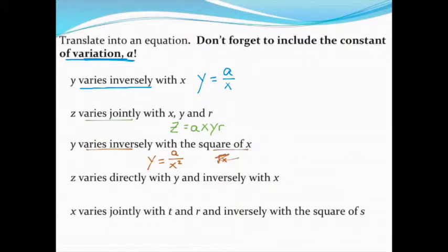Let's keep on going down the list. Next up, we have Z varies directly with Y and inversely with X. I see a lot of people on this one try to write two different equations. We're only allowed to write one. So there should be one equal sign. The way this is going to look, we'd have Z equals,